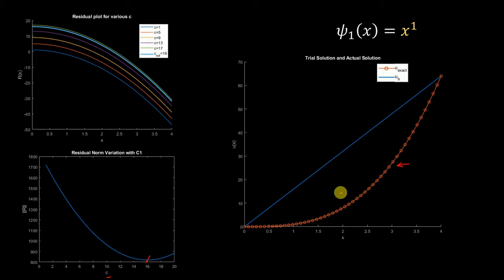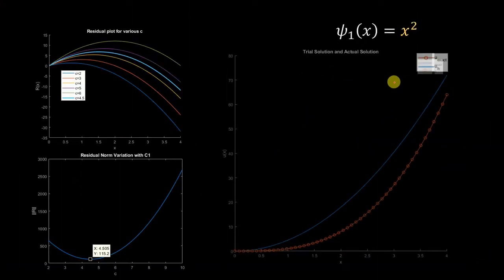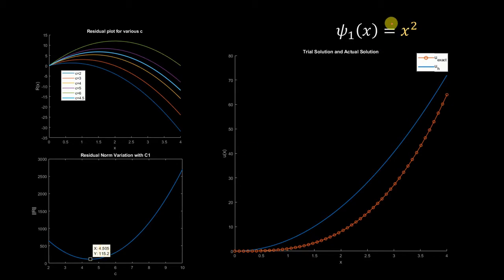Now let us use ψ₁ = x². For this particular basis function you can see that our trial solution is not very close to the exact one. The minimum value of the residual norm occurs at c = 4.5, so the solution in this case is 4.5x², and you can see that there is a large gap between the trial solution and the exact solution.